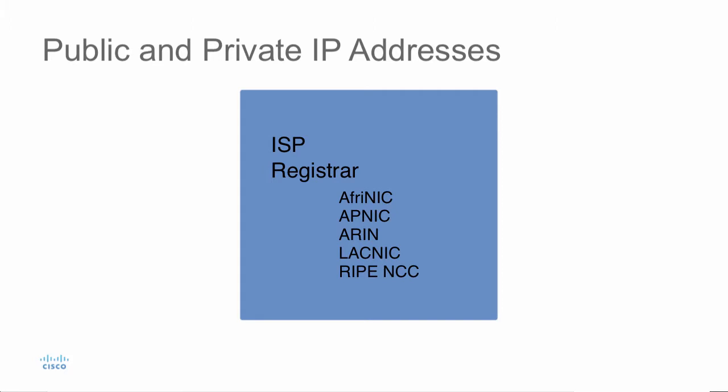For the internet to remain stable, we have to maintain unique addresses on the network. So there has to be a mechanism in place that makes sure we are not duplicating addresses that are going to be seen on the internet. Originally, this was something that the InterNIC was handling. However, the InterNIC does not exist anymore, and so IANA is the one who handles this.